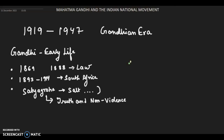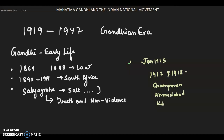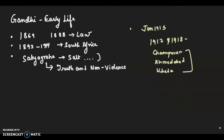Gandhi returned to India in January 1915 and made an extensive tour of the country over the next three years. In 1917 and 1918, he was involved in three significant struggles: in Champaran in Bihar, in Ahmedabad, and in Kheda in Gujarat. He practiced Satyagraha in all three of these places.